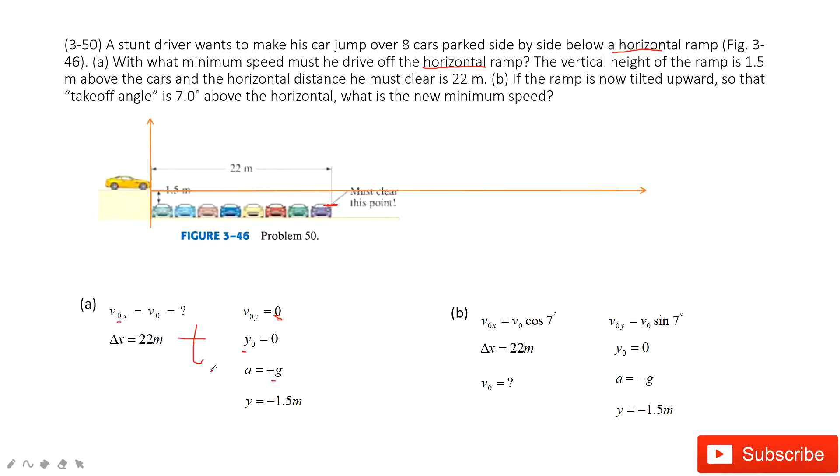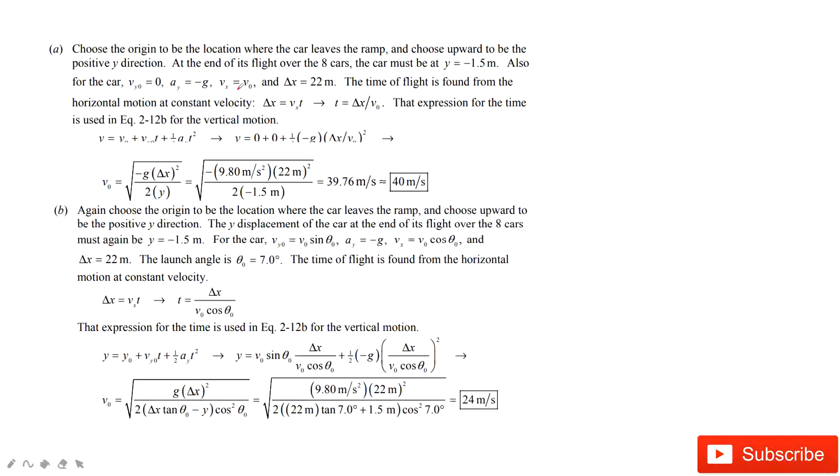How can we find t? Look at the y component. There will be no initial velocity, but we have initial position, acceleration, and final position. Super easy to get the t. After we get t, we can input this in the x component and then we get the initial velocity. This is how we solve the problem.